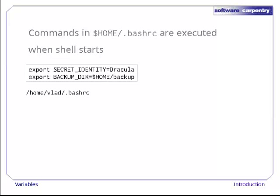For example, here are two lines in Vlad's .bashrc file. These two lines create the variables secret_identity and backup_dir, give them values, and export them so that any programs the shell runs can see them as well.